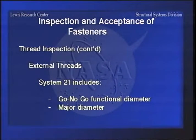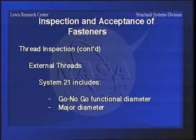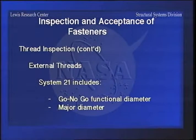For external threads, system 21 just includes go/no-go diameter and the major diameter. You usually measure with what they call a ring gauge, which is a calibrated thread in a ring that replaces what you would normally use as a nut. You try to thread the fastener into it - if it goes, it's fine. You then use the no-go, and if it doesn't go in that one, you are within acceptable limits. It doesn't tell you exactly what your dimensions are, but tells you the thing will work - that's called the functional diameter.